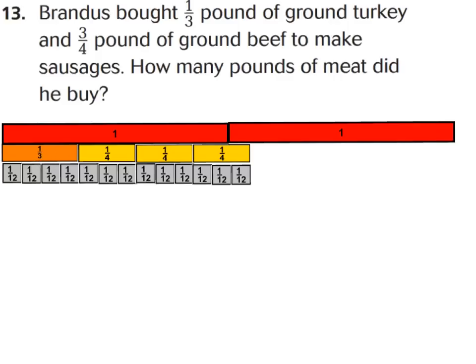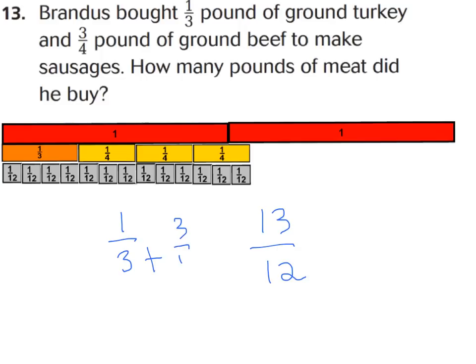Thinking about denominators 3 and 4, listing multiples, the first common one is 12. I grabbed all the 12ths and laid them side by side next to my thirds. My 1/3 has the value of 4/12 and my 1/4 has the value of 3/12, so I did that 3 times for 3/4. When you add up all your 12ths — 1, 2, 3, 4, 5, 6, 7, 8, 9, 10, 11, 12, 13/12 — the final sum equals 13/12. That's an improper fraction, and looking at my model I can see I have 1 whole and 1/12 left over, so the answer is 1 pound and 1/12 of a pound of meat.